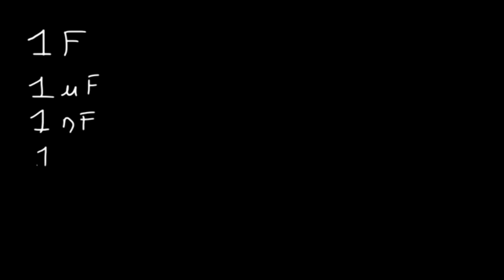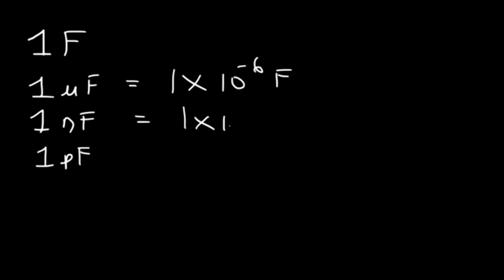Now let's get back to capacitance. The unit of capacitance is the farad. One farad is a very, very large number, and only supercapacitors have this much capacitance. Most common capacitors, like electrolytic capacitors, might be in the area of a microfarad — it could be 10 or 100 microfarads. You have some capacitors that are nanofarads, and even some in the picofarad level. A microfarad is 1 times 10 to the minus 6 farads, nano is 10 to the minus 9, and pico is 10 to the minus 12.